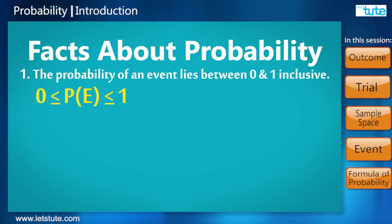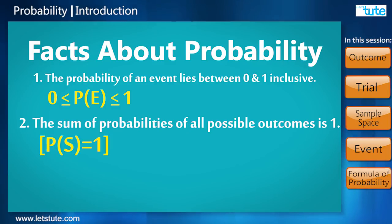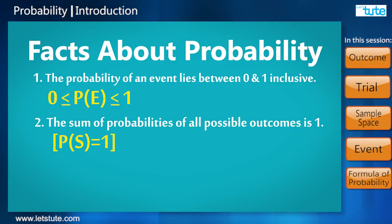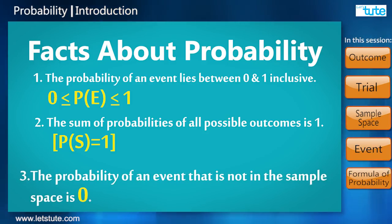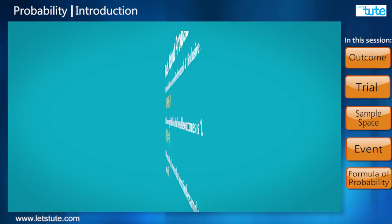The sum of probabilities of all possible outcomes is one. The probability of an event that is not in the sample space is zero. With the learnings from this session, try solving this question.